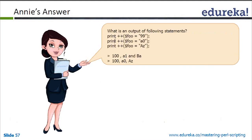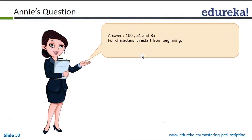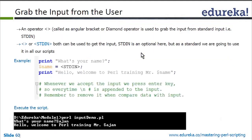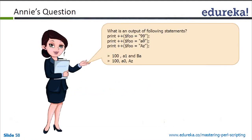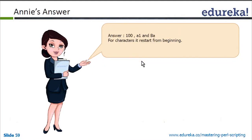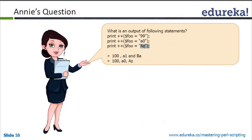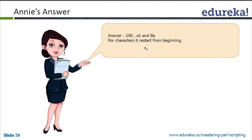What is the output of 'print ++foo' when foo equals 99? Since it is pre-increment, foo becomes 100 and that is printed. For string increments: A0 becomes A1, and AZ becomes BA because when the character Z ends it restarts from the first character. This is another good feature of Perl — after Z is completed, it increments back to A. This behavior is specific to characters and is unique to Perl.